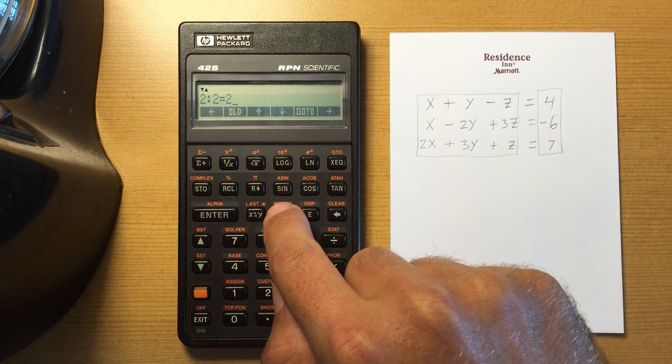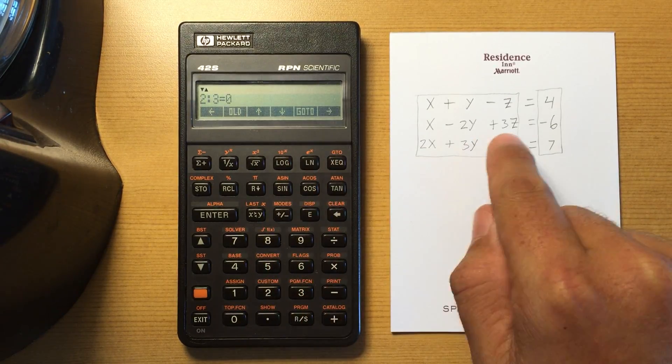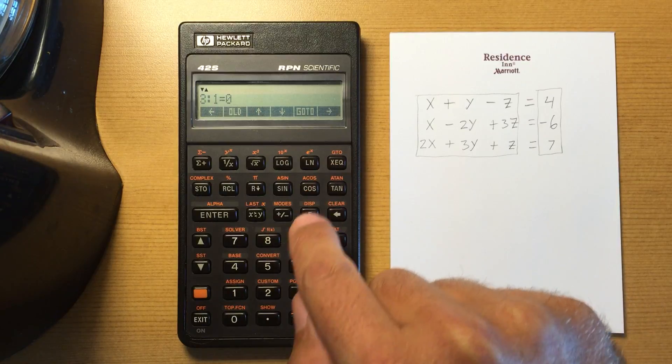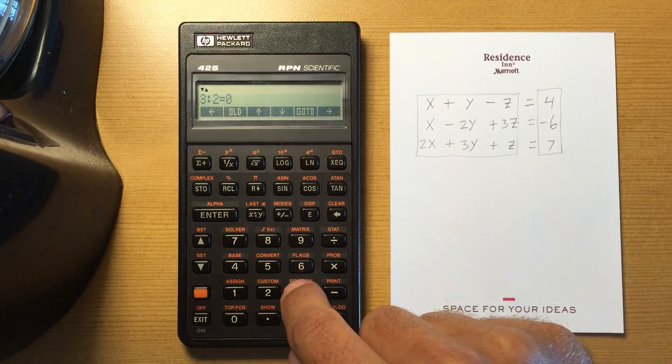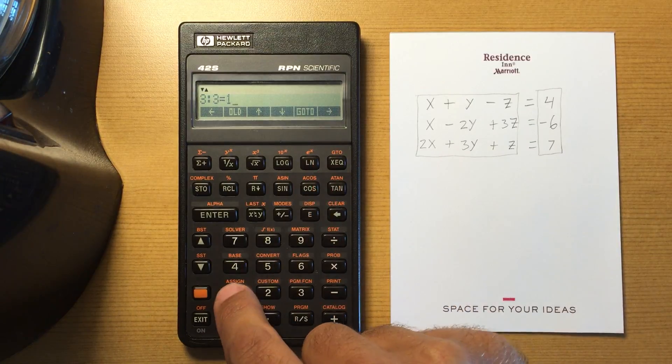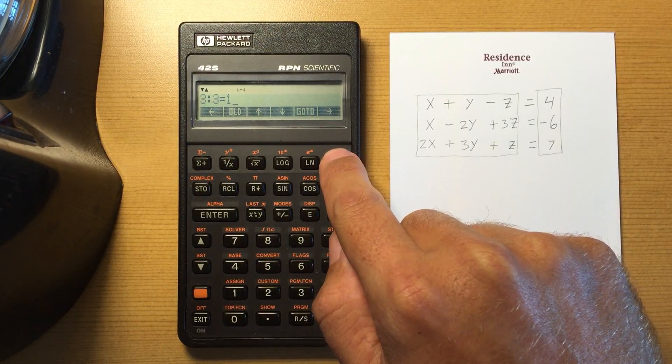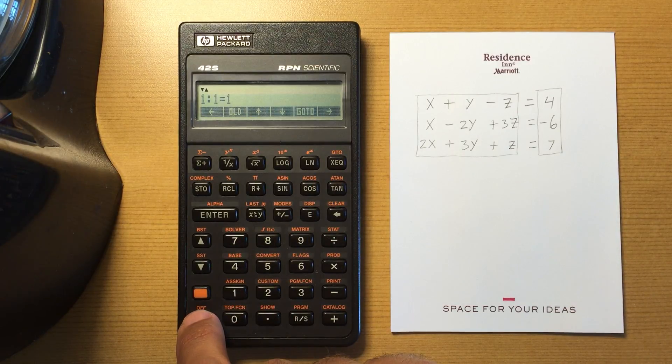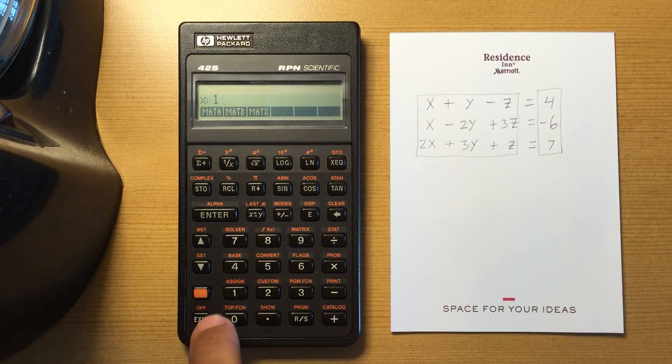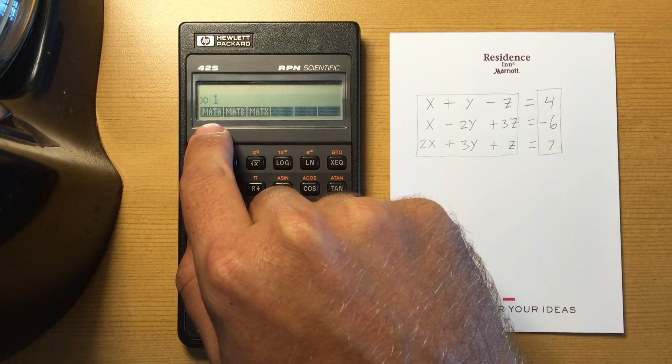And then we're on 3,1 so 2, 3, and 1 and I can check these if I want to but I'm done with that. So go ahead and hit exit, so we've entered in our matrix A.